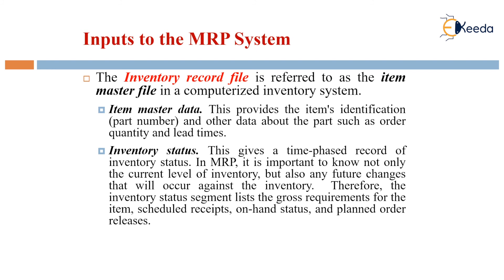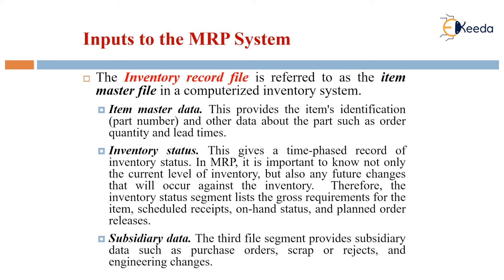The inventory status segment lists the gross requirements for the item, scheduled receipts, on-hand status, and the planned order releases. Additionally, the subsidiary data file provides data such as purchase orders, scrap or rejects, and engineering changes.